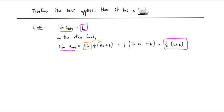We know the limit exists, so we set these equal to each other. To solve: multiply both sides by 2 to get 2L equals L plus 6. Subtract L from both sides, and our limit L is equal to 6.